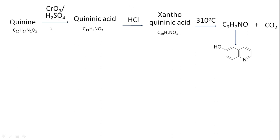So quinine upon oxidation gave quinic acid, which upon HCl treatment underwent demethoxylation — if a methoxy group was present, it converted OCH3 to OH, which upon thermal degradation gave 6-hydroxy along with CO2 elimination from the ring. Quinic acid upon treatment with KMnO4 and sulfuric acid gave tricarboxypyridine, confirmed by synthesis — clearly indicating a pyridine unit in the ring structure.